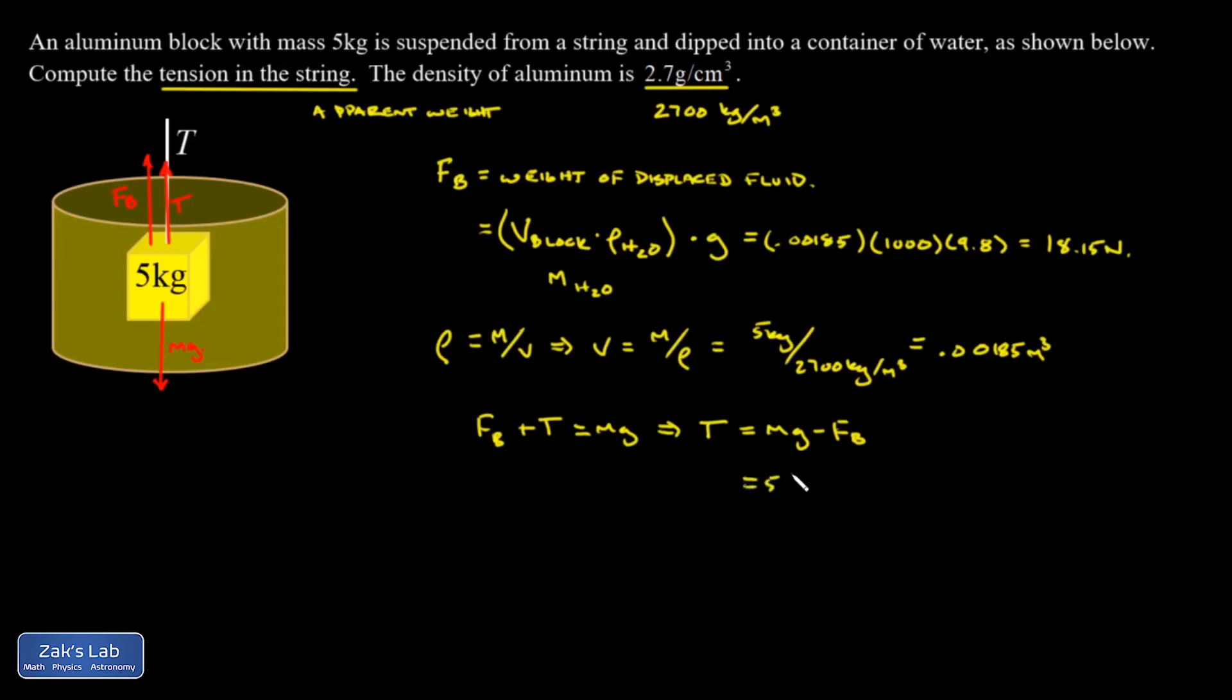Plug in my numbers: m is 5 kilograms, g is 9.8, the buoyant force took a little bit of work but that's 18.15 newtons. And when I'm all done, I get 30.9 newtons for the tension in the string. Again, we can refer to that as the apparent weight because that's the force it takes to hold up the block.